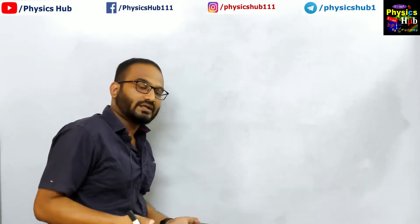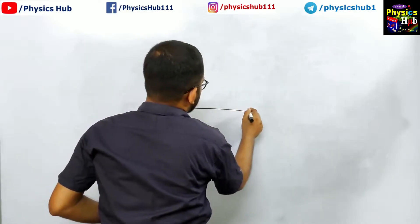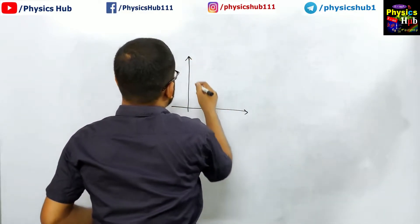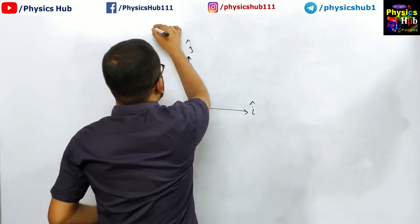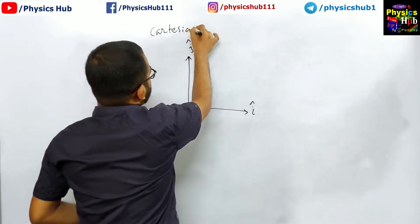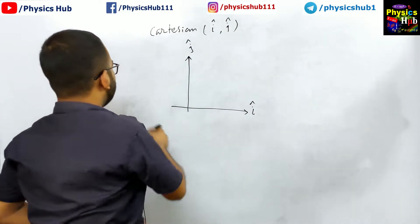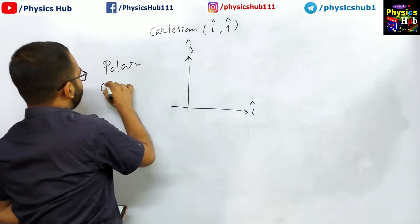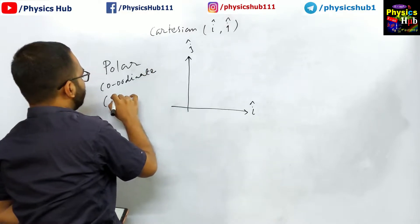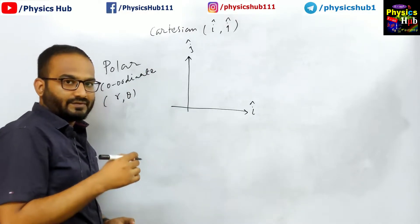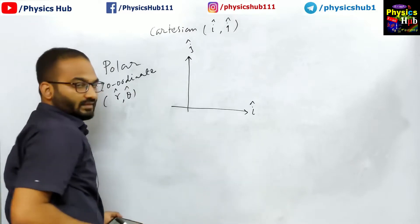Let us start with the conventional coordinate system — the Cartesian system. In Cartesian coordinates in two dimensions, we have i cap and j cap; these are the two unit vectors. In polar coordinates, which is also a two-dimensional system, we have r and theta. Now, how can we establish the relationship between this polar coordinate and the Cartesian coordinates, specifically between the unit vectors r cap and theta cap?